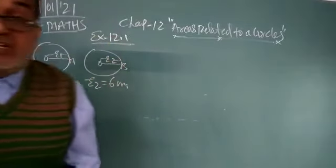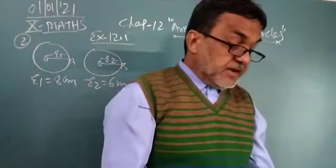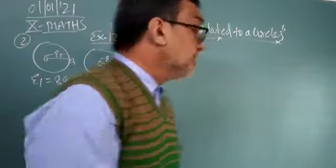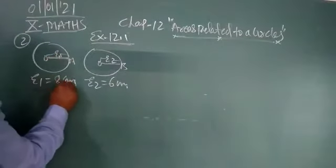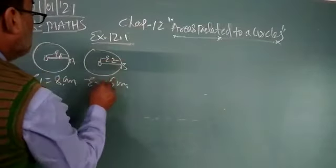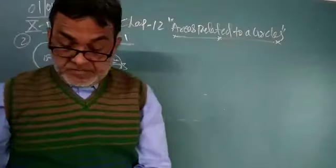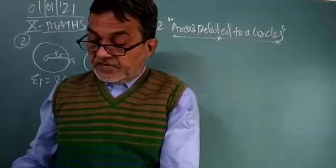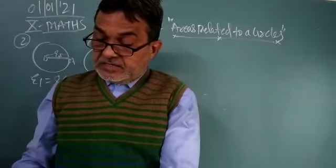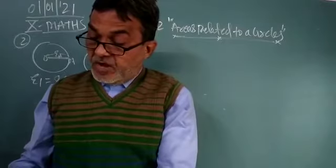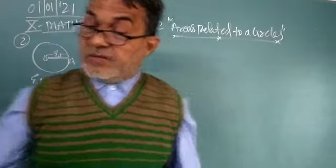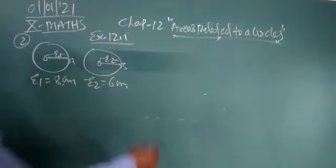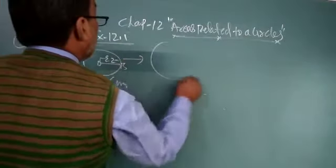In this question, there are radius of two circles, 8 and 6. Radius of this circle, suppose this is the other one, 8 centimeter, and R2 is 6 centimeter. Find the area of the circle, the total sum of this, equal to the sum of the area of these two circles. What is the radius of the circle formed?